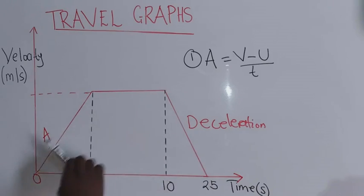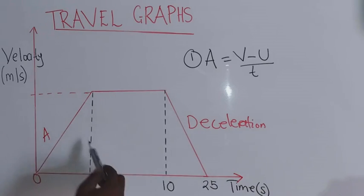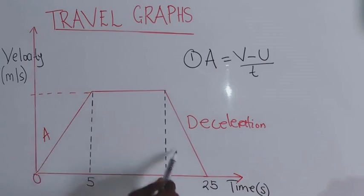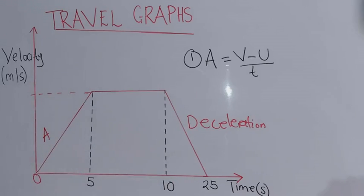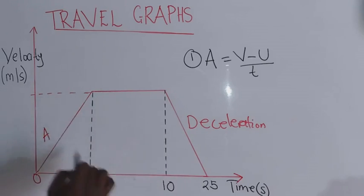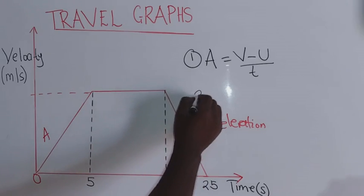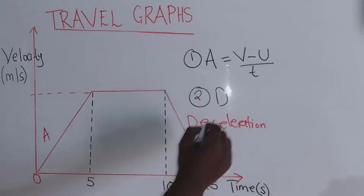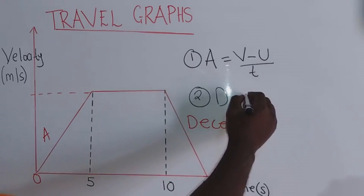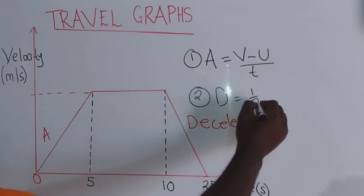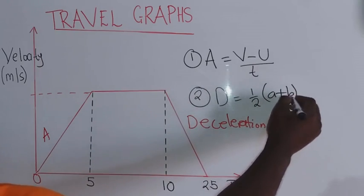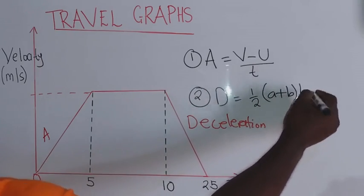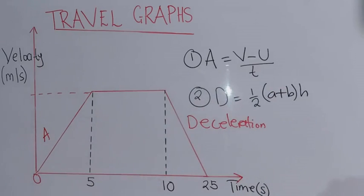Under the graph, the distance is considered as the area under the graph. When you look at this shape, it is a trapezium. The formula for distance is: distance equals one-half times (a plus b) times h. This is the second formula you must take note of.